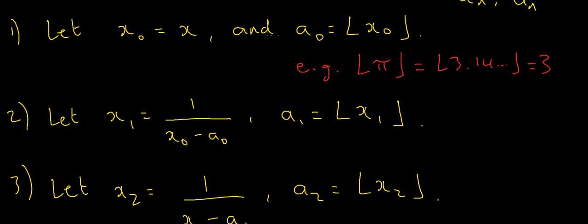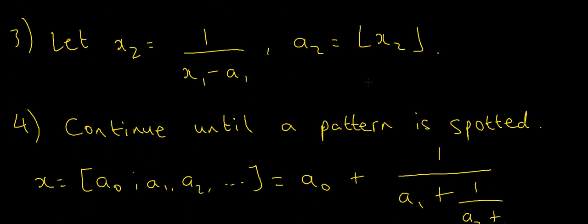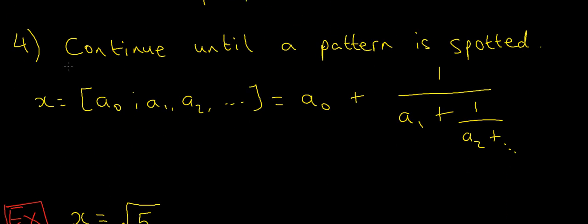Once we've found x₀ and a₀, we move to find x₁. x₁ is just going to be 1 over x₀ minus a₀. Then a₁ is going to be the floor of x₁. When we move down to x₂, x₂ is going to be 1 over x₁ minus a₁. And a₂ is just going to be the floor of x₂. You basically want to continue this pattern until you've found enough terms, or until you can spot a pattern. Once you've found this sequence of a_n's, the continued fraction of x would just be the continued fraction with terms a₀, a₁, a₂, and so on.